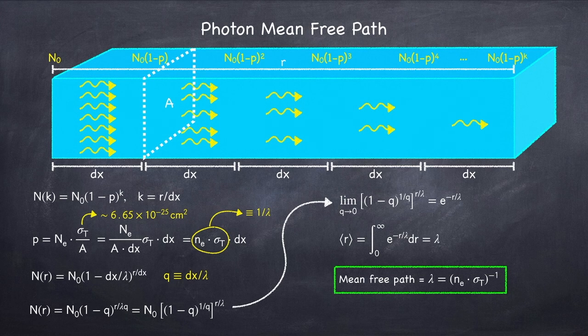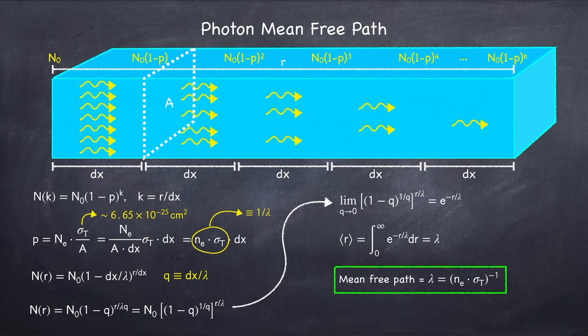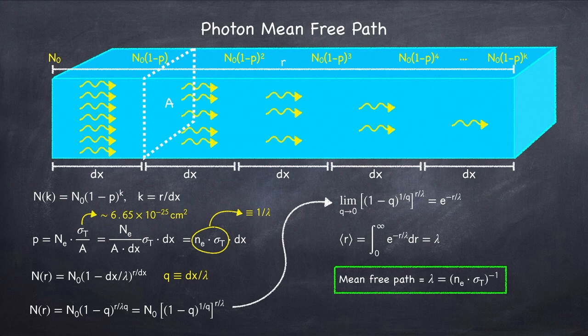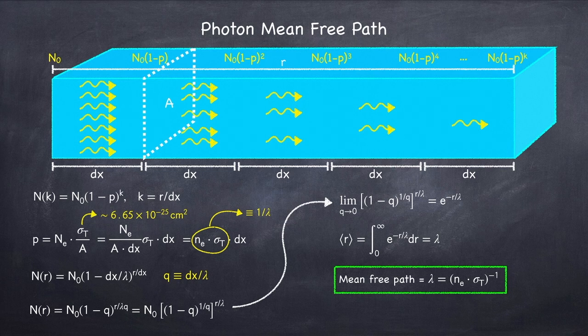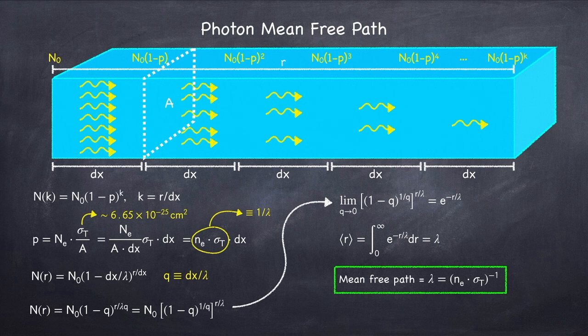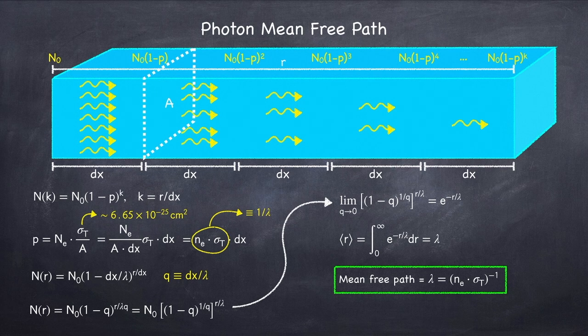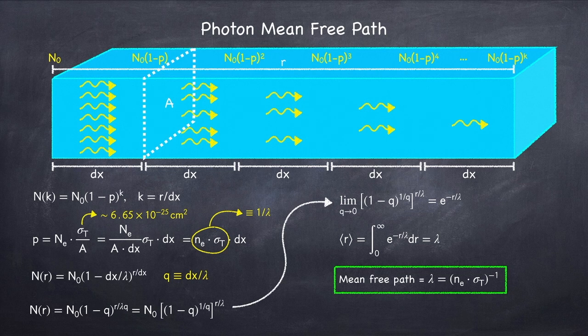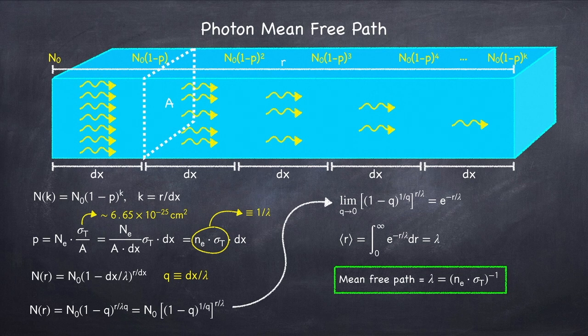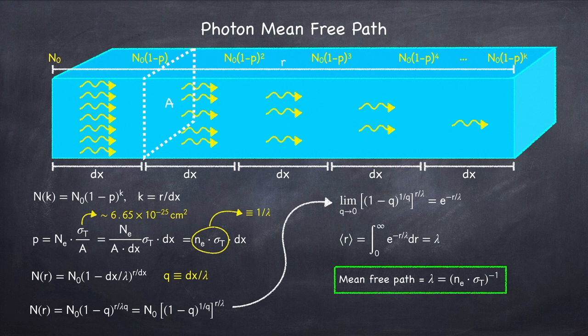In this analysis for the mean free path, there's nothing special about electrons and photons. In general, the mean free path of anything traveling through a medium will be 1 over the number density of targets times its corresponding cross-section. If you're finding this video interesting so far, please be sure to like and subscribe, and maybe share it with a couple friends.